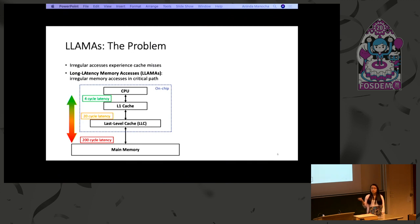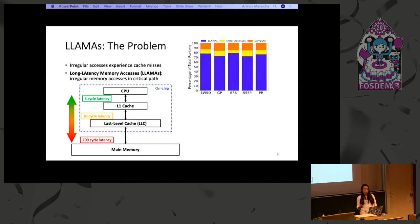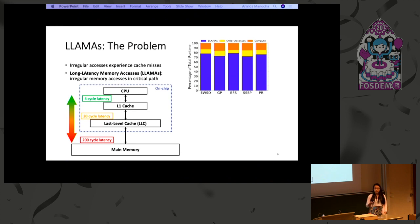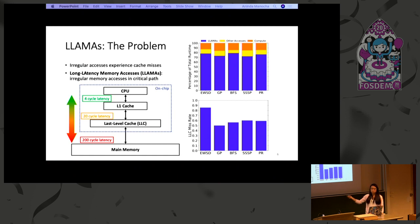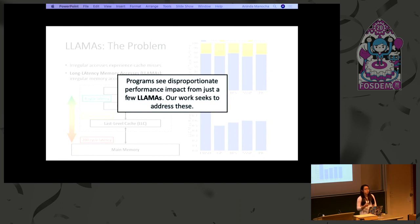To quantify why LLAMAs are problematic, we look at five different graph and sparse applications and break down their runtimes into compute versus memory. All of the compute is highlighted by the orange bars, and the memory accesses are broken into LLAMAs versus non-LLAMAs in yellow. As you can see, the LLAMAs are dominating the runtime for all of these applications. The graph below shows specifically the LLAMA last-level cache miss rate — across all five applications, the last-level cache miss rate is 0.5 or above, meaning more than 50% of the time these LLAMAs are performing an expensive long-latency memory access to main memory.